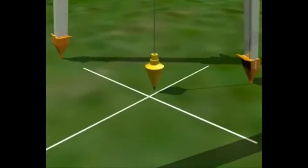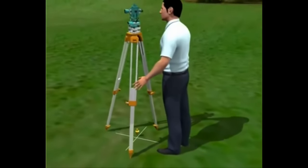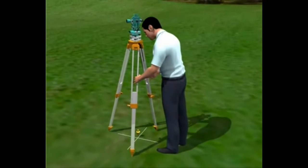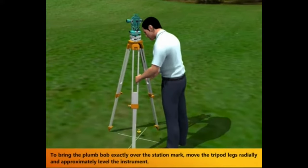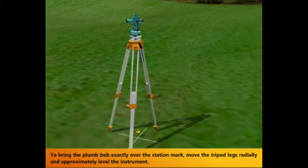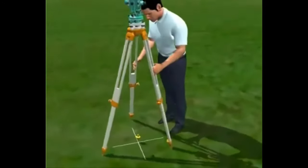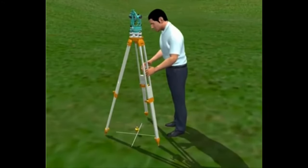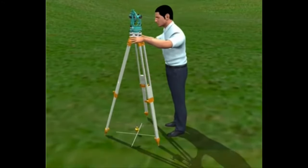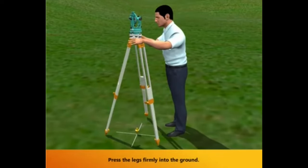The close view of plumb bob shows the plumb is not in level. To bring the plumb bob exactly over the station mark, move the tripod legs radially and approximately level the instrument. Press the legs firmly into the ground.